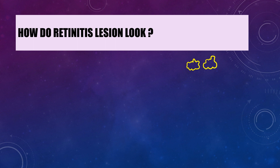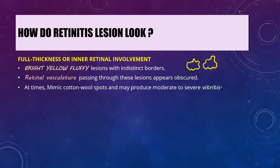How does a retinitis lesion look? This depends on the degree of inflammation — whether it is limited to the inner layers of the retina, the outer layers, or involves the entire full thickness. If the inflammation is full thickness or involving just the inner layers, the retinitis lesions will be bright yellow in color, with indistinct borders and a slightly fluffy appearance, very similar to a cotton wool spot. The retinal vasculature present in the nerve fiber layer will also be affected and will not be seen very clearly.